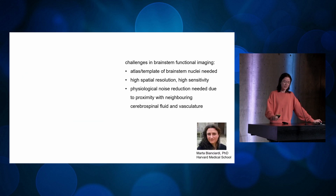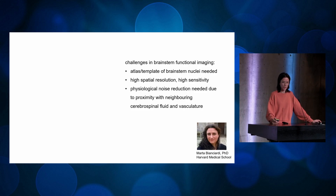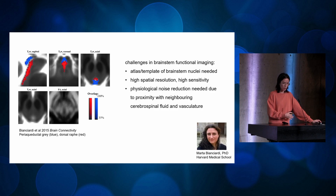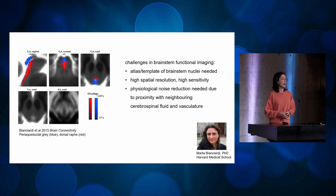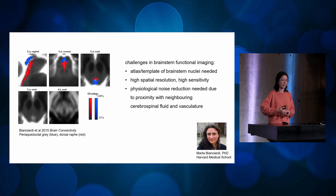That's where Marta Bianciardi comes in. She's a professor at Harvard and has dedicated her career to brainstem neuroimaging, both functional and structural. One thing she started doing was delineating brainstem nuclei in MNI152 template space. For example, in red is the dorsal raphe and in blue the periaqueductal gray. I knew these were nuclei but had never really visualized them — for instance, the dorsal raphe is this long, skinny structure.